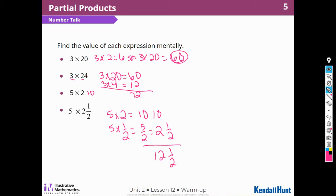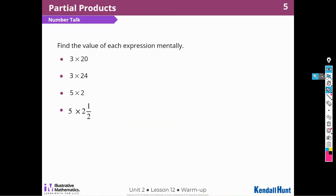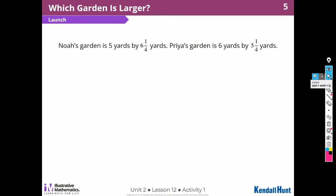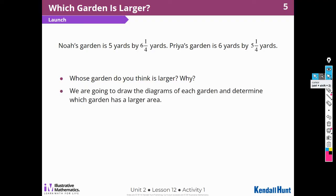All right. Very good. Let's move on to our first activity. Noah's garden is 5 yards by 6 and a quarter yards. Priya's garden is 6 yards by 5 and a quarter yards. Whose garden do you think is larger? We're going to draw these diagrams of each garden and determine which garden has a larger area. So we're going to prove it.